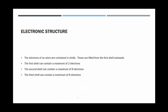Now for electronic structure, you need to know that the electrons of an atom are contained in shells surrounding the nucleus, and these are always filled from the first shell outwards. The first shell contains a maximum of two electrons. The second shell contains a maximum of eight. The third shell contains a maximum of eight. You only need to be able to do this up to the 20th element.